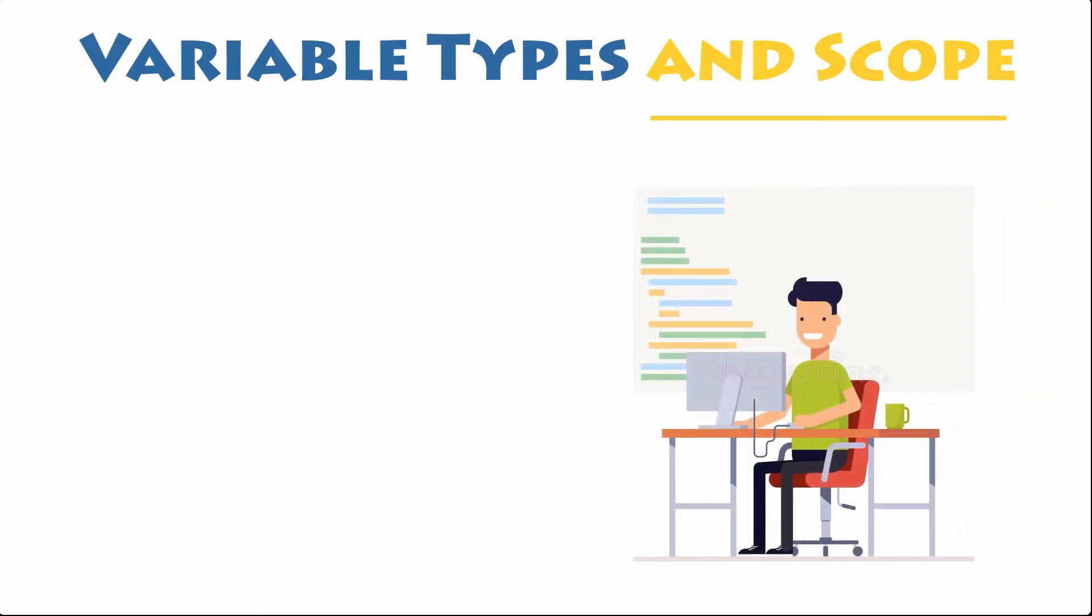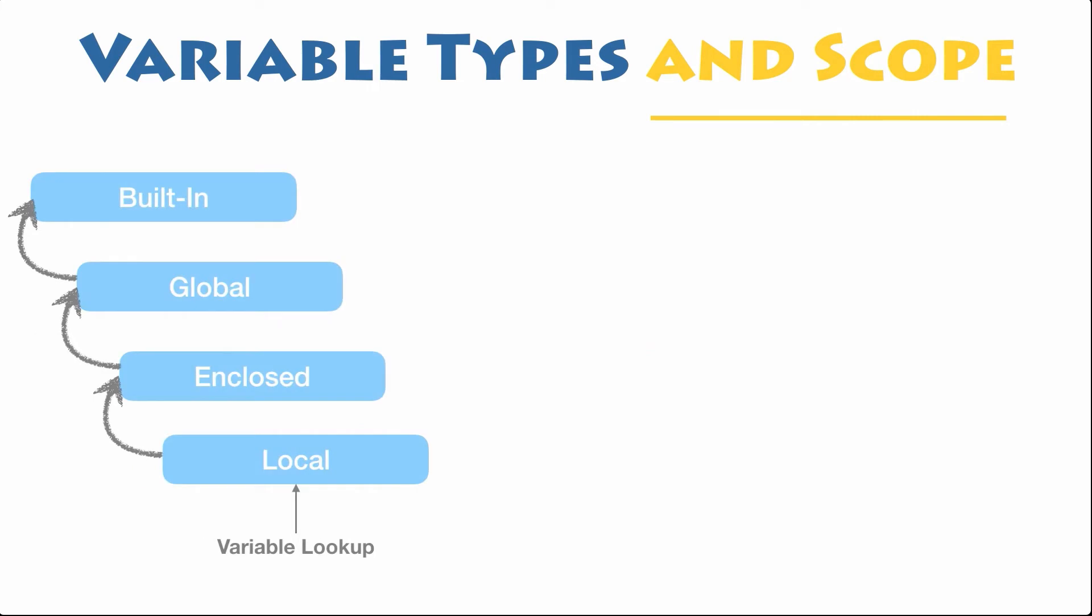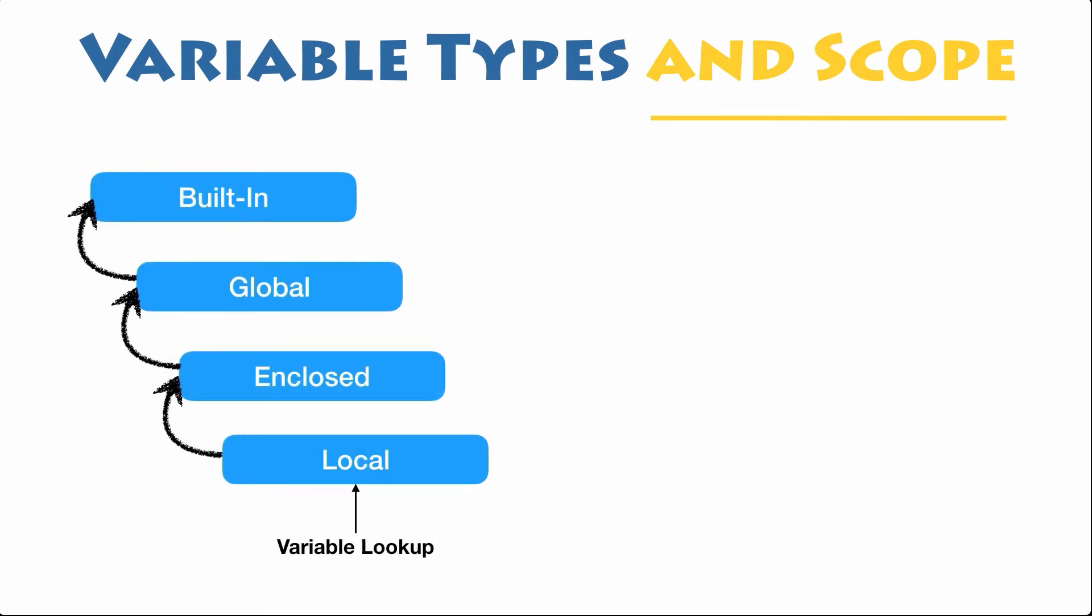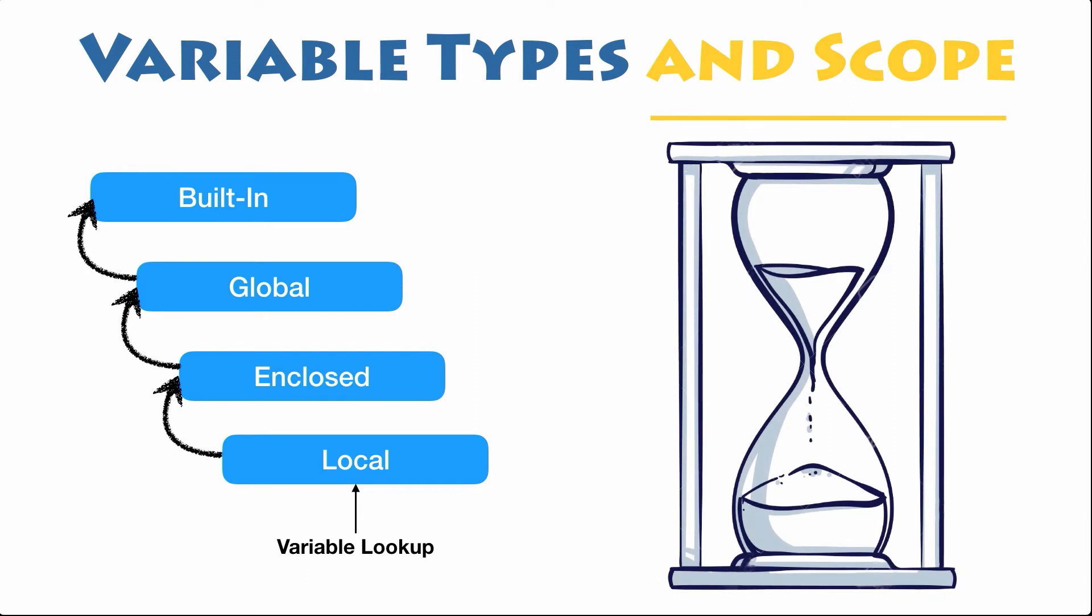If you are familiar with Python or any other programming languages, you will certainly know that variables need to be defined before they can be used in your program. Depending on how and where it was defined, a variable will have to be accessed in different ways. Not all variables are accessible from all parts of your program and not all variables exist for the same amount of time.